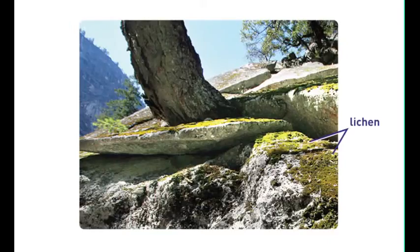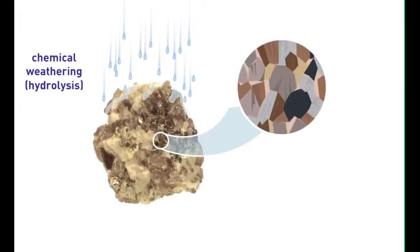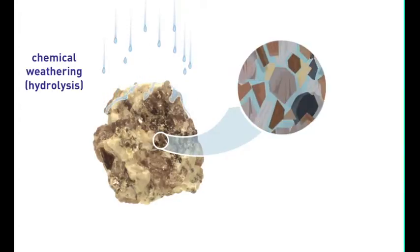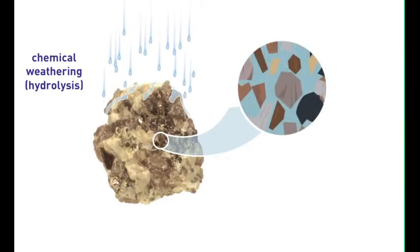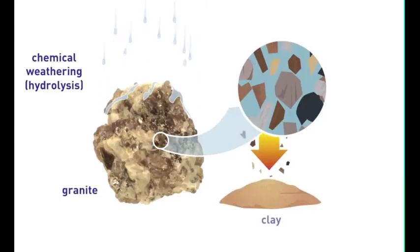Acid producing lichen and tree roots that eat through rock are natural sources of chemical weathering. Many minerals are also relatively unstable and deteriorate in the presence of water and natural chemicals. For example, the feldspar found in granite breaks down into clay.